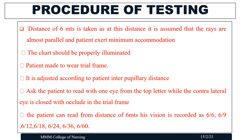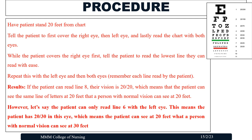The procedure for testing includes standing at six meters, as this distance assumes that light rays are almost parallel and the patient exerts minimum accommodation. The chart should be properly illuminated. The patient is made to wear a trial frame adjusted to their pupillary distance. Ask the patient to read with one eye from the top letter while the other eye is occluded. Vision is recorded as 6/6, 6/9, 6/12, 6/18, 6/24, 6/36, or 6/60. Have the patient cover the right eye first, then the left eye, and finally read with both eyes, reading the lowest line they can read with ease each time.